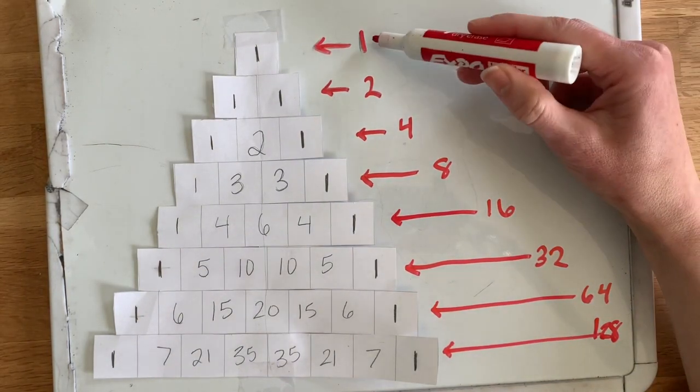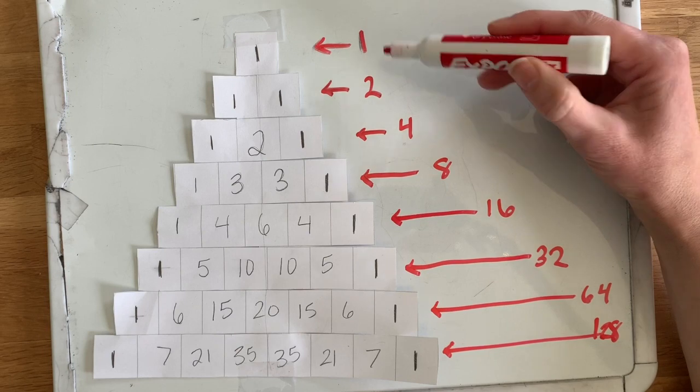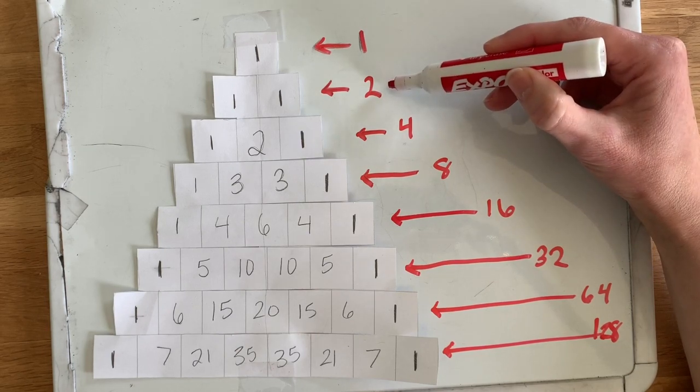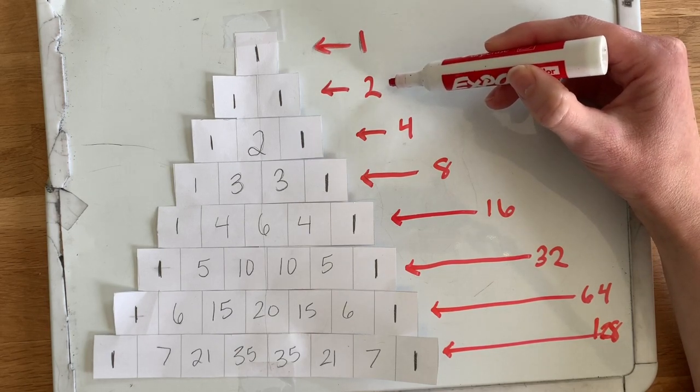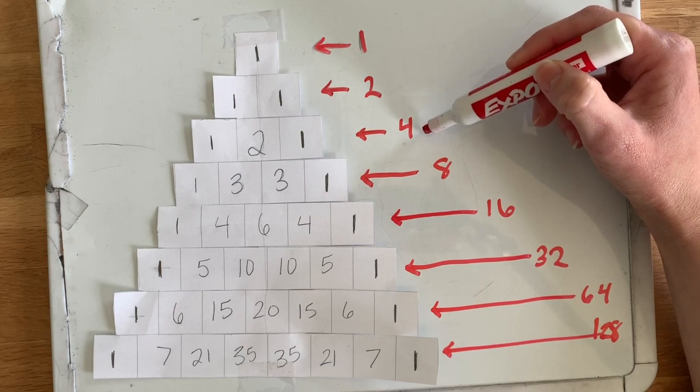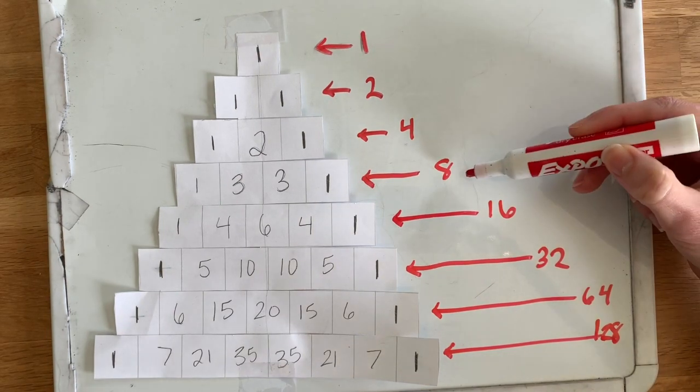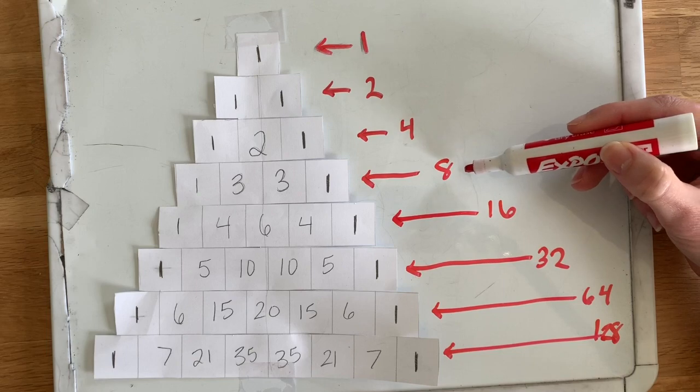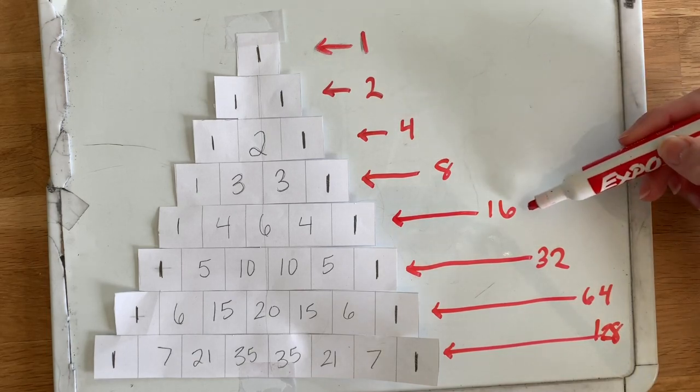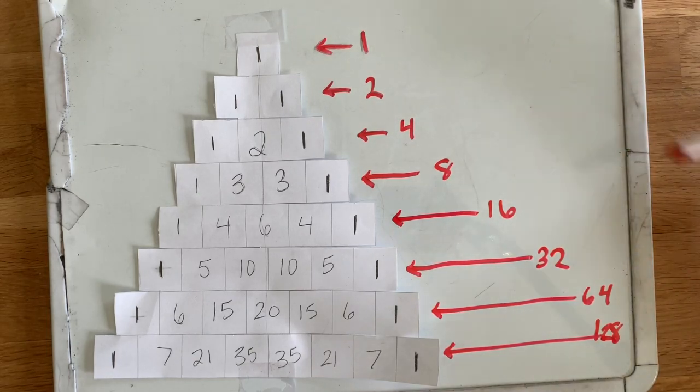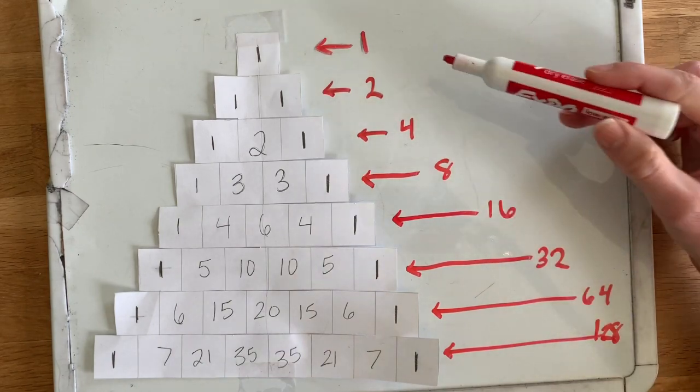So what is one plus one? Two. What is two plus two? Four. What is four plus four? Eight. Eight plus eight is 16. Do you see the pattern? So every time we go down a row it doubles.